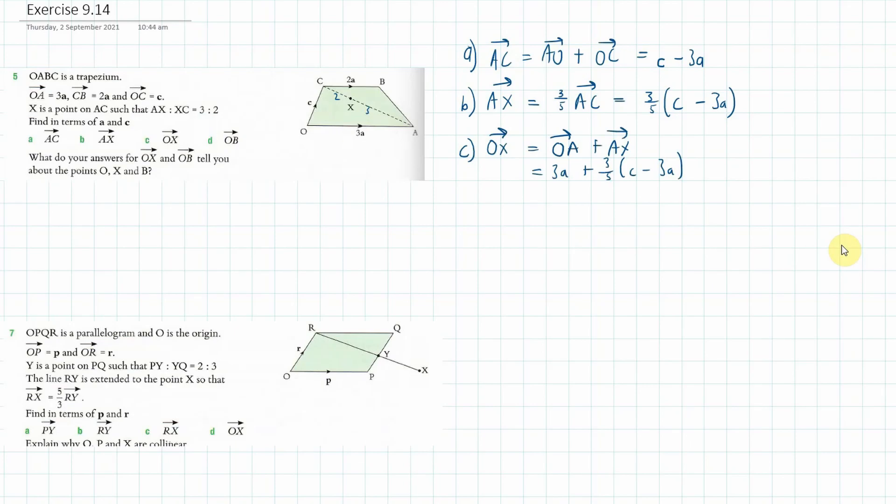Okay, we might come back to that a bit later on. Let's just carry on. So what does this give us? 3A plus 3 fifths C minus 9 fifths A. Now let's gather our like terms. 3A is the same as 15 fifths A. Well, you can check this in a calculator if you need to. So it would be 15 take away 9, which is 6 fifths A. So I think I'm going to have 6 fifths A plus 3 fifths C.